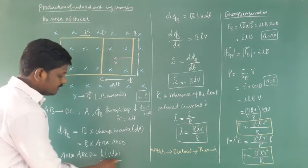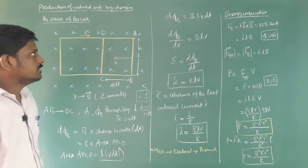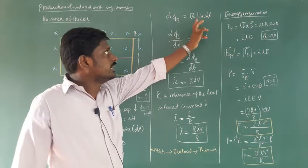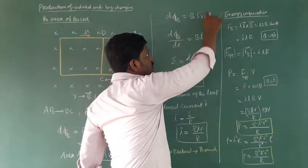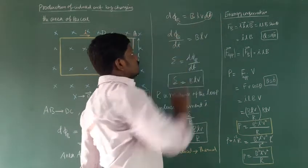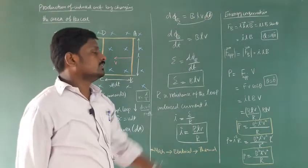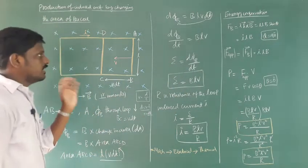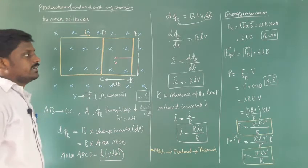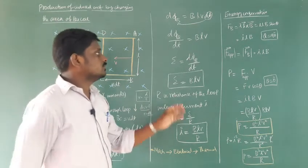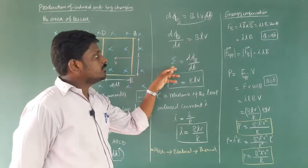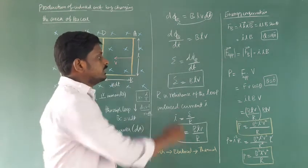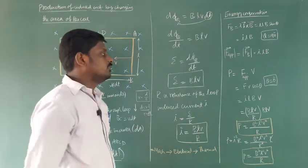Substituting the area ABCD, we get the change in magnetic flux in time dt as B·L·V·dt. The dt goes to the denominator, so dΦ/dt equals BLV. The induced EMF produced due to the change in area, when placed in a uniform magnetic field, equals dΦ/dt.